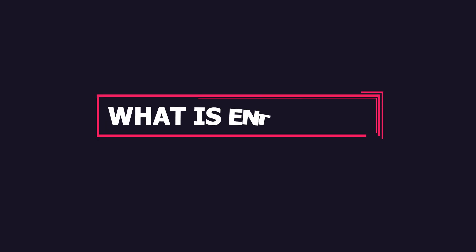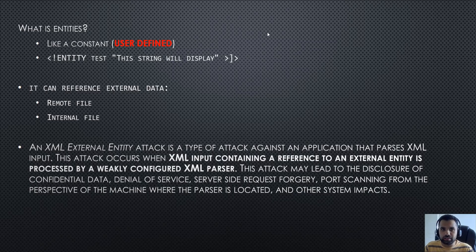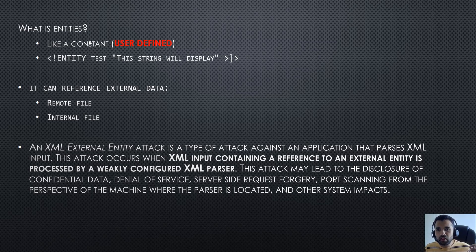First off, what is an entity? It's a synonym for a constant. As you may have seen in various applications, developers define a constant and then throughout the application whenever they have to refer to its value, they can easily do so. A constant could be as simple as a variable named 'a' with the value 'this is a constant variable'. Whenever the developer refers to 'a', the application replaces it with the string defined in the constant. Don't worry if this isn't straightforward — we'll see an example to make it clearer.